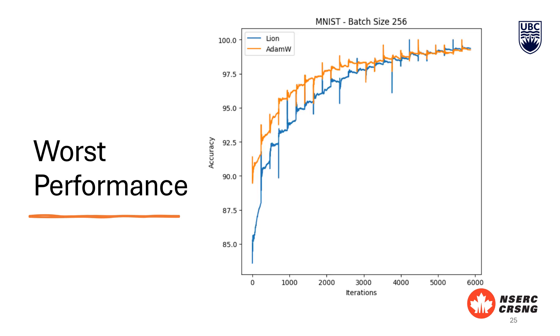This is the graph for the MNIST dataset. We can see that AdamW consistently outperforms LION in terms of accuracy. However, LION's performance is still relatively close to AdamW, indicating it is not significantly worse.